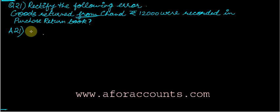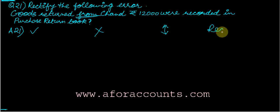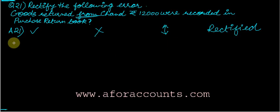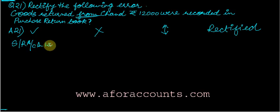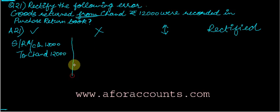Let's learn more by passing the entries using the right, wrong, reverse, rectified method. The correct entry should have been: Sales Return Account debit 12,000, to Chand. But what was actually done — it was recorded in purchase return. So the wrong entry passed was: Chand Account debit, to Purchase Return Account 12,000.